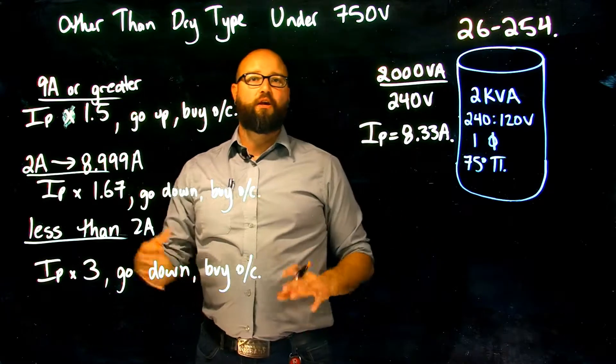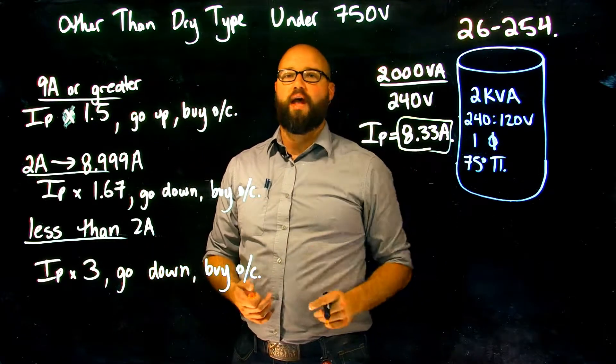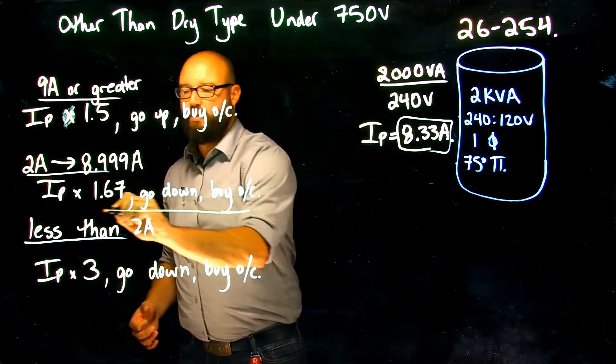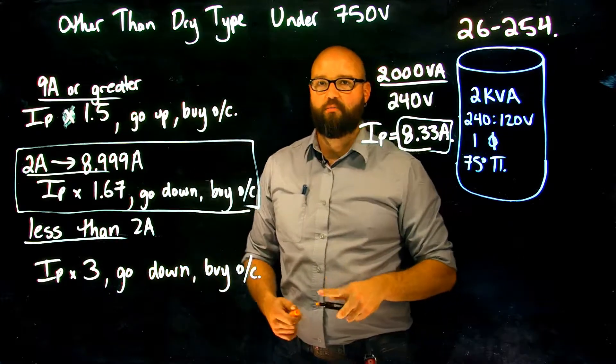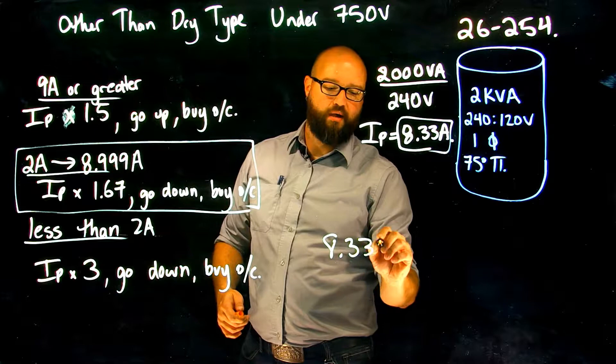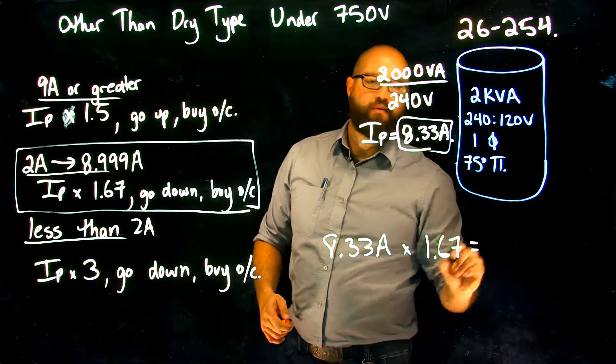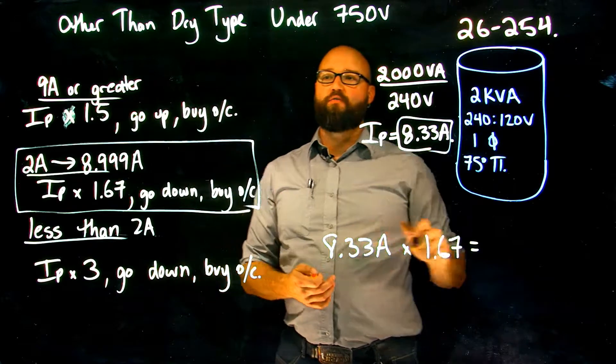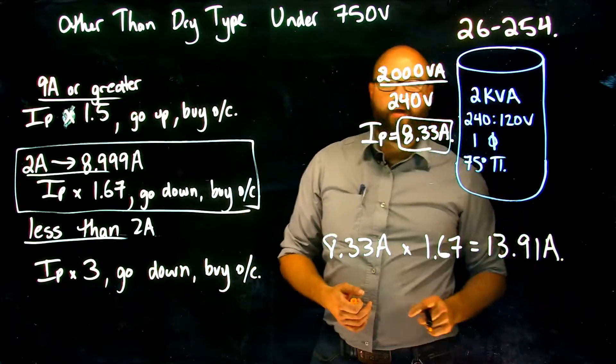We have three individual choices here depending on what the rated primary current is. In this case, because we are looking at 8.33 amps as our rated primary, this right here becomes our multiplier. Our 167 percent is our multiplier. So we're going to take our 8.33 amps, multiply by 1.67, gives me a maximum rating of my overcurrent of 13.91 amps. I am not allowed to exceed that.